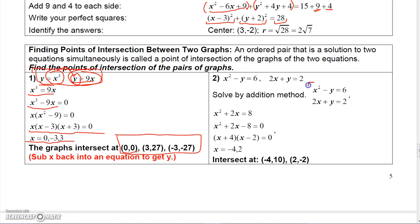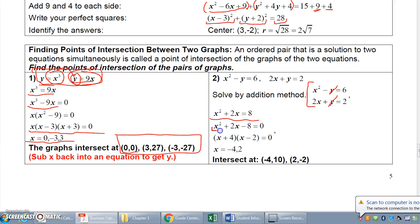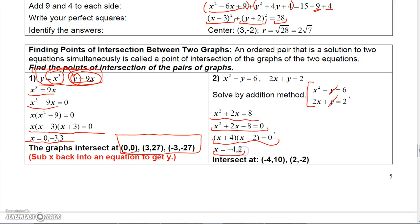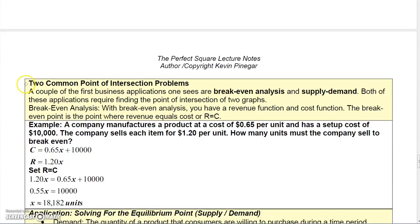For these two equations, I lined them up and added them together so the y terms cancel. Adding gives x squared plus 2x on the left and 8 on the right. Subtracting 8 and factoring gives x equals negative 4 and x equals 2. Plugging negative 4 into one of the equations gives y equals 10, and plugging in 2 gives y equals negative 2. So these two graphs intersect at (negative 4, 10) and (2, negative 2) — go ahead and verify this on a graphing utility.